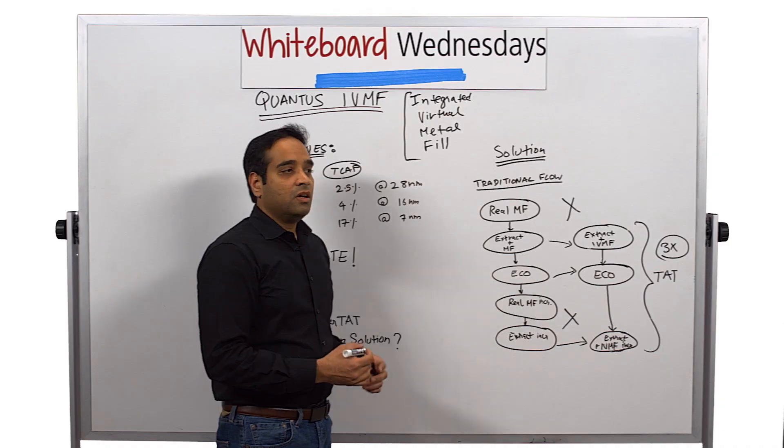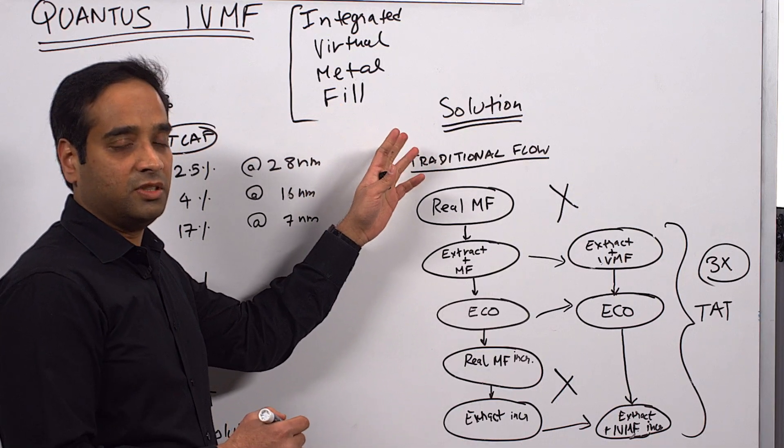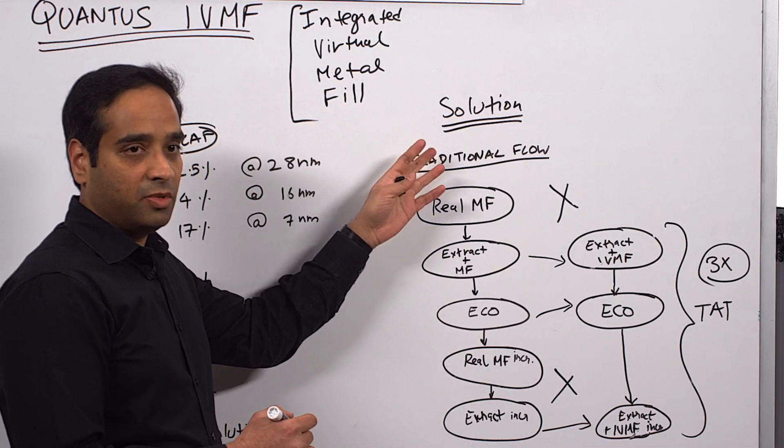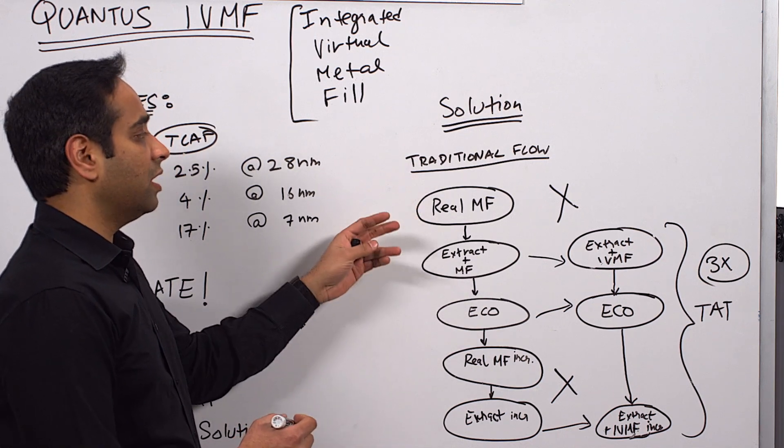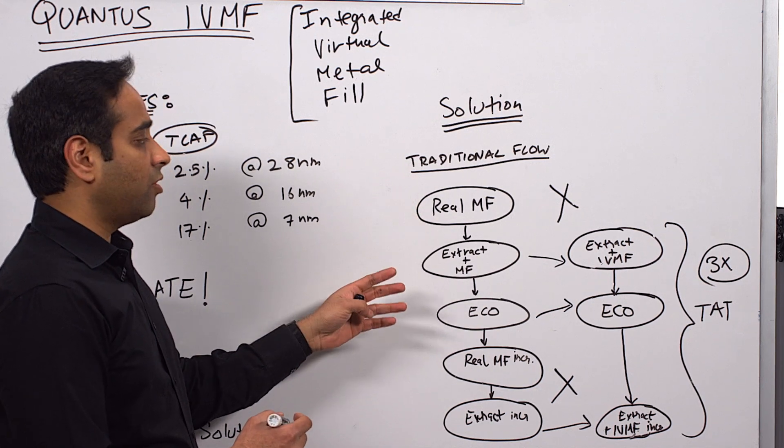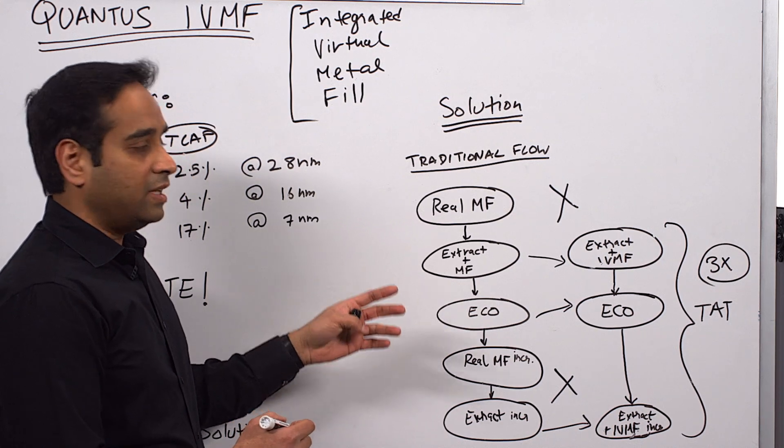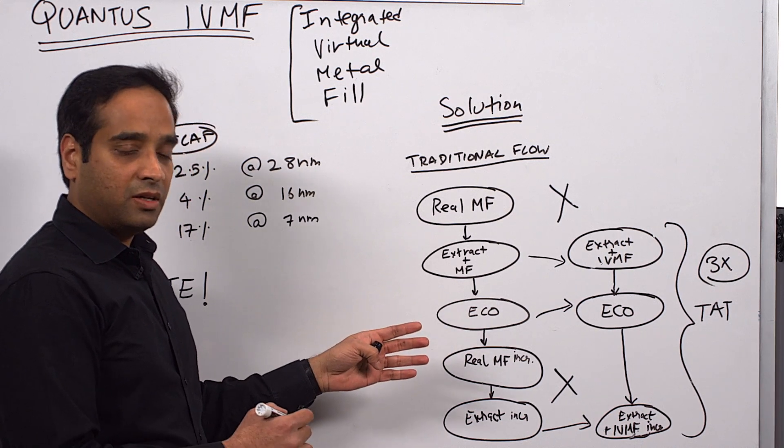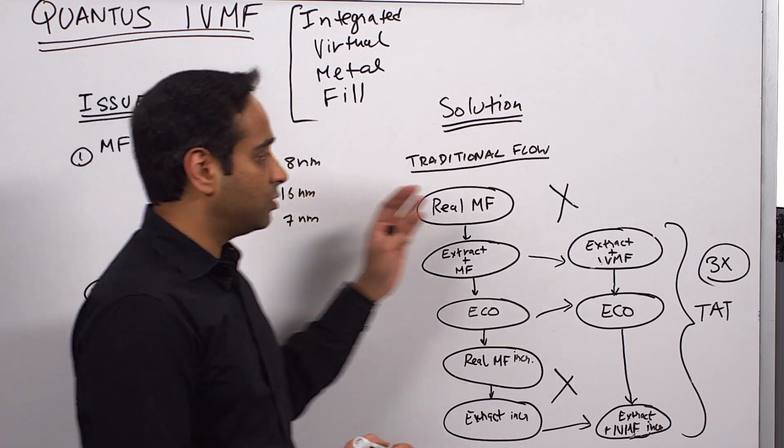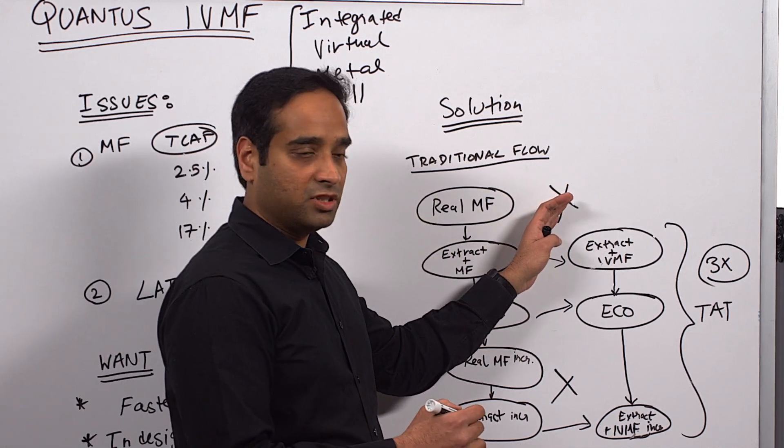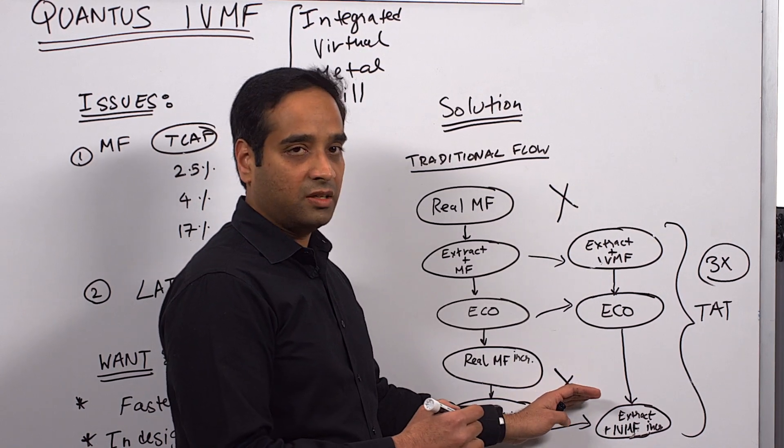Now we come to the solution. Qantas has addressed these issues through the IVMF solution. We've taken the traditional flow where we have real metal fill generation followed by extraction with real metal fill, then ECO followed by incremental extraction with incremental metal fill. We've removed the two stages where real metal fill generation takes additional time.